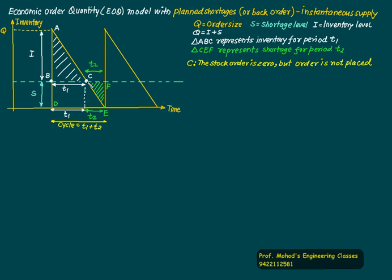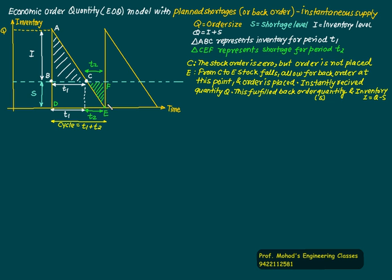At point C the stock level is zero, but no order is placed. We continue to point E. As we move from C to E there is a shortage building up. At point E we place the order and suddenly receive inventory equal to Q, meeting both the back order S and inventory I, since Q equals I plus S. The inventory after receiving becomes Q minus S.